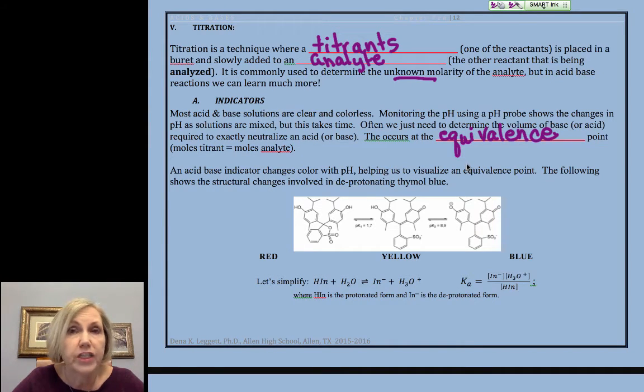Now, the problem with acid-base situations is that the acid is clear and colorless, the base is clear and colorless, acids plus bases form salt, which is clear and colorless, and water, which is clear and colorless. So we need help being able to visualize or indicate when we have reached that equivalence point. And to do that, we use indicators.